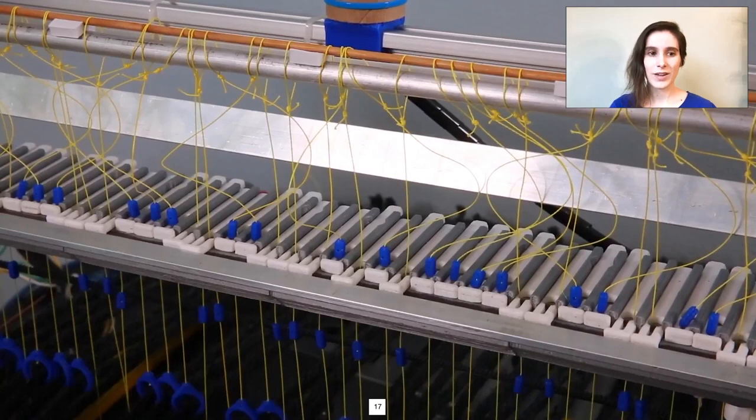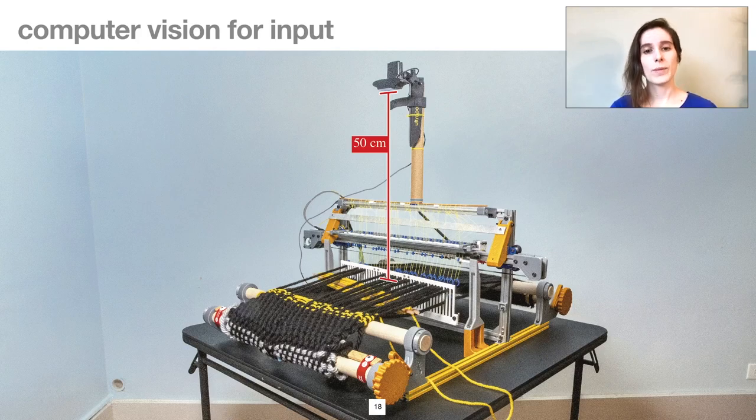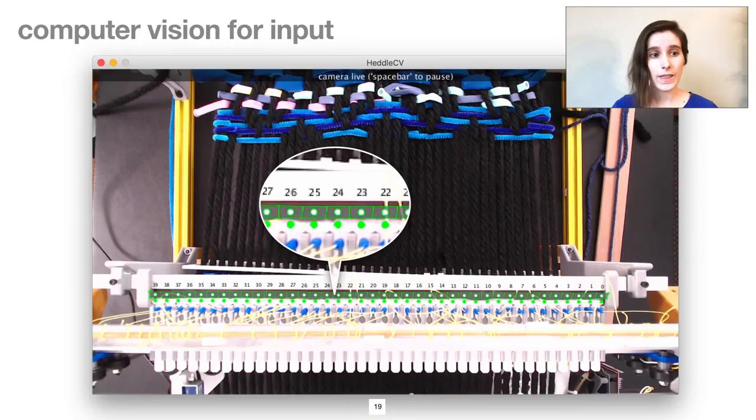To sense these sliders, but also minimize the electronic complexity of the loom, we use a computer vision approach. We mount a commodity webcam such that its field of view includes the selection array, and we can use the visual contrast between the slider and its background to determine slider locations. As you can see, the camera's field of view extends all the way to the front part of the loom where the fabric is being formed.